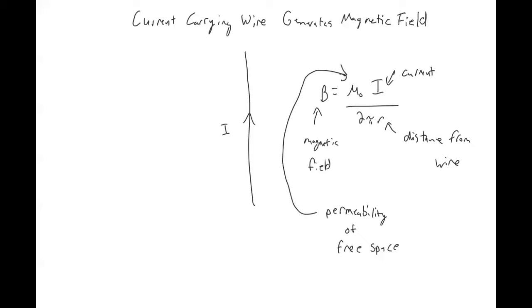And the value for this thing is 1.26 times 10 to the minus 6. And the units on that are Tesla meter per amp, where the meter is meters, the T is Tesla, the s is second, the a is for amps which is current, and the kg is kilogram.